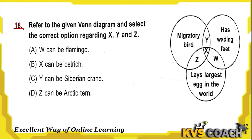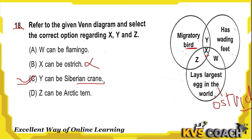Next question: refer to the given Venn diagram and select the correct option regarding X, Y, and Z. X is a migratory bird with wading feet and lays the largest egg — but the ostrich lays the largest egg and is not a migratory bird, so this is wrong. Y has wading feet and is also a migratory bird — Y can be a Siberian crane, which is a migratory bird and cranes have wading feet — this is possible and correct. W can be flamingo and Z can be Arctic tern — both are not correct as they don't lay the largest egg. So only Option C is correct.